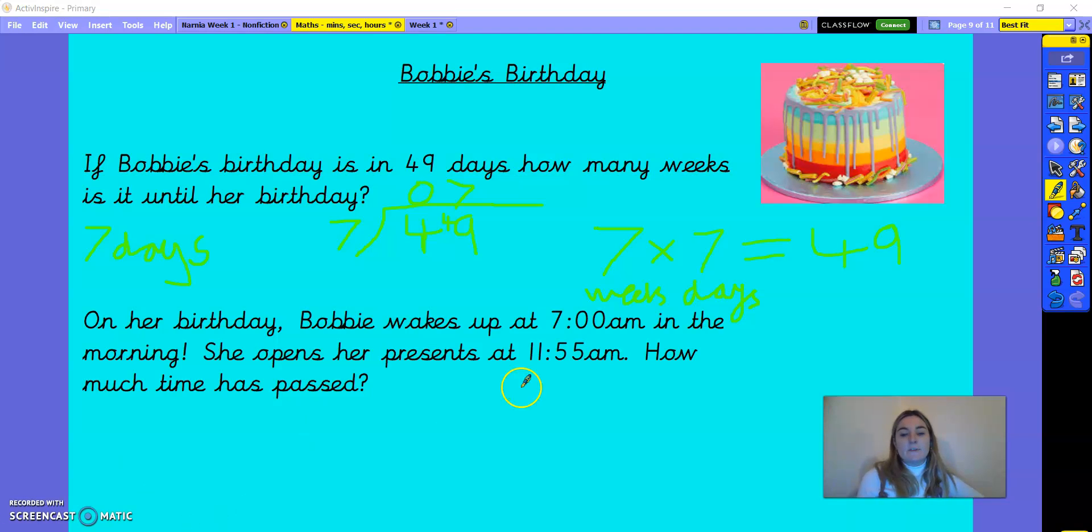So on her birthday, Bobby wakes up at 7 a.m. in the morning. She opens her presents at 11:55 a.m. How much time has passed? Okay, so I need to count up to 11:55. So seven, eight, nine, ten, eleven. And then I've got this 55 here. So there's one, two, three, four. Four hours and 55 minutes. Because if it was a full hour, then the time would show 12. So we need to make sure that we add the 55 minutes afterwards because not a full hour has passed, because otherwise it would be five hours. So the answer is four hours and 55 minutes.